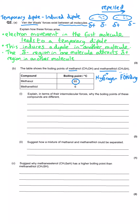Applying this to methanol: does it have a delta-positive hydrogen? Yes — it's got one attached to the oxygen. In that O-H bond, the oxygen is electron-rich and the hydrogen is electron-deficient. So we have one tick: a delta-positive hydrogen, and also the electron-rich oxygen with its lone pair. That means methanol would have hydrogen bonding — that's our first mark.